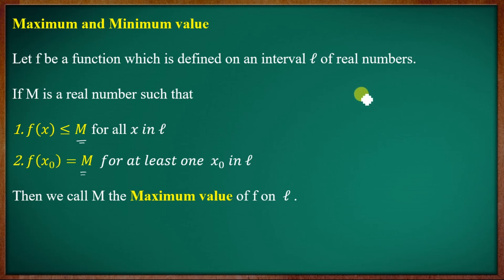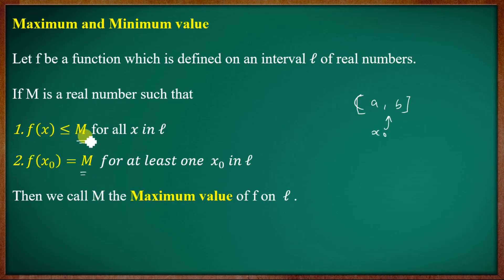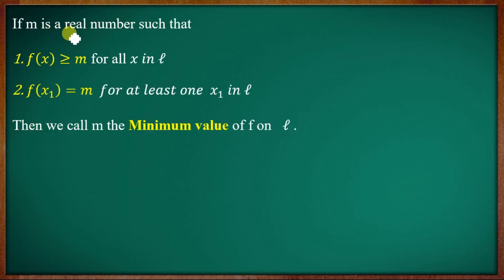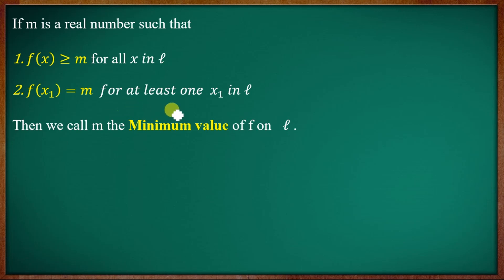On the interval. So if you have an interval [a, b], this is the point x₀. When you have an interval, M equals the maximum value. And you have a maximum value. This is the minimum value of m. But if small m is a real number such that f(x) is greater than or equal to small m for all x in L; second, f(x₁) equals small m for at least one x₁ in L.